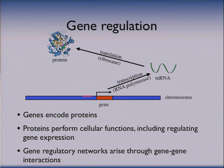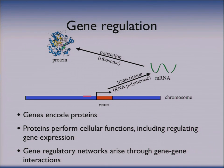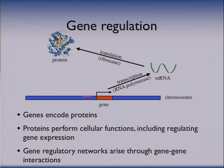I'm interested in studying gene regulation. All of your cells have a copy of your DNA. Each copy of the DNA has genes on it, and these genes are what I'm interested in. In particular, the genes encode for proteins. They do this through a two-step process where the gene is copied into an mRNA through transcription, and then the mRNA is translated — the nucleotide sequence is translated into an amino acid sequence — and this makes the protein.